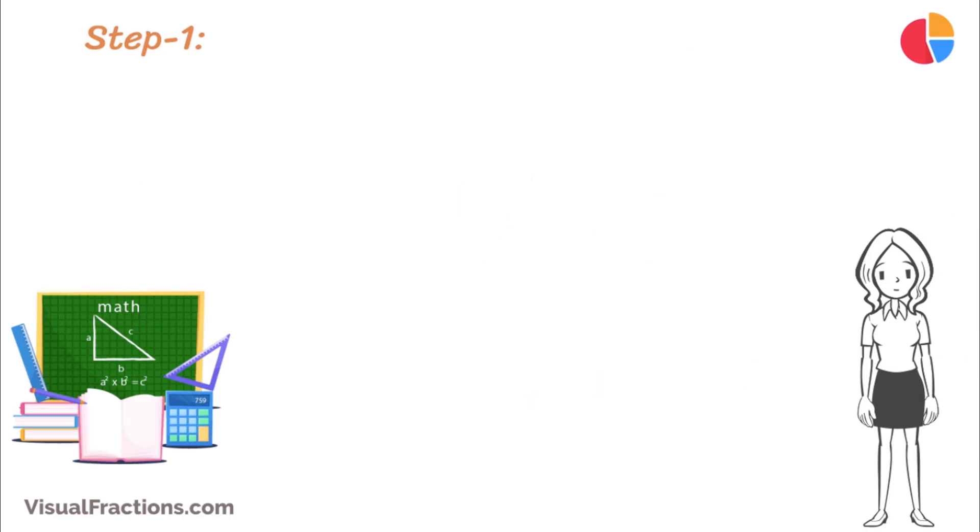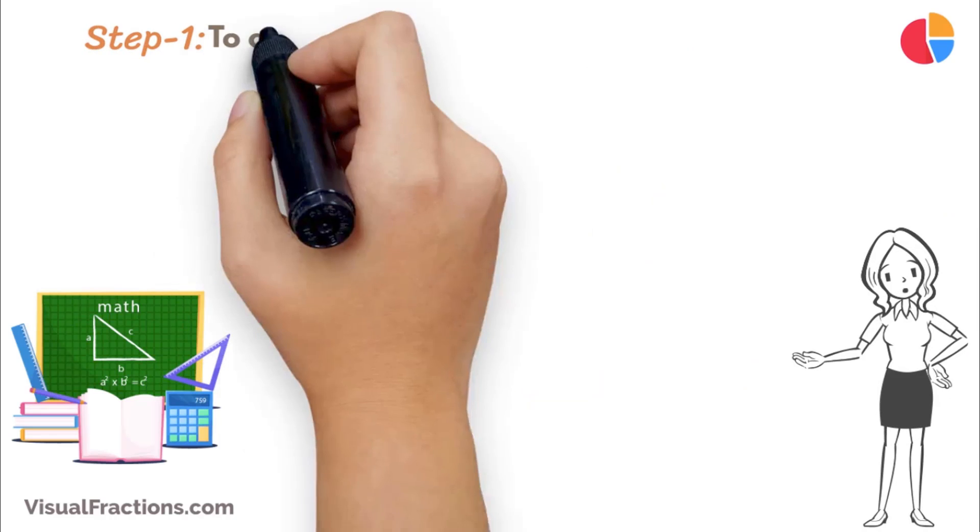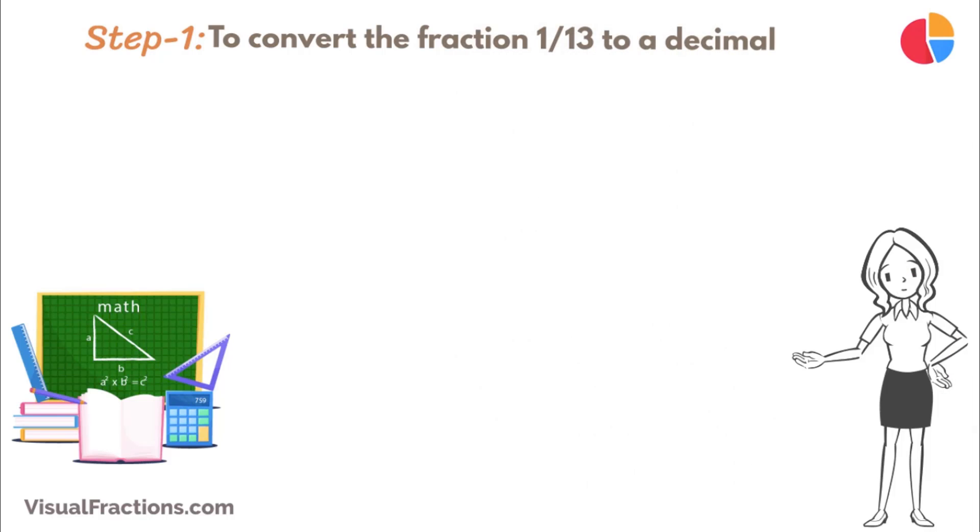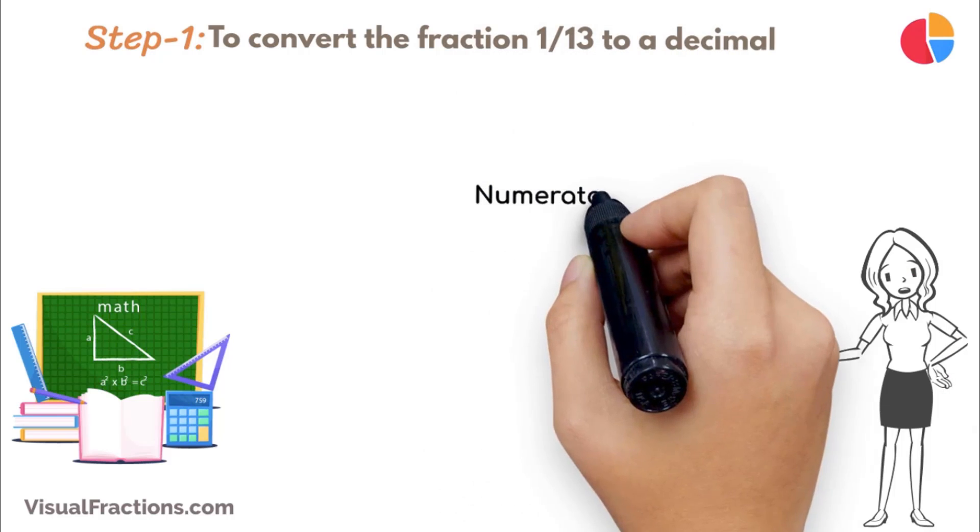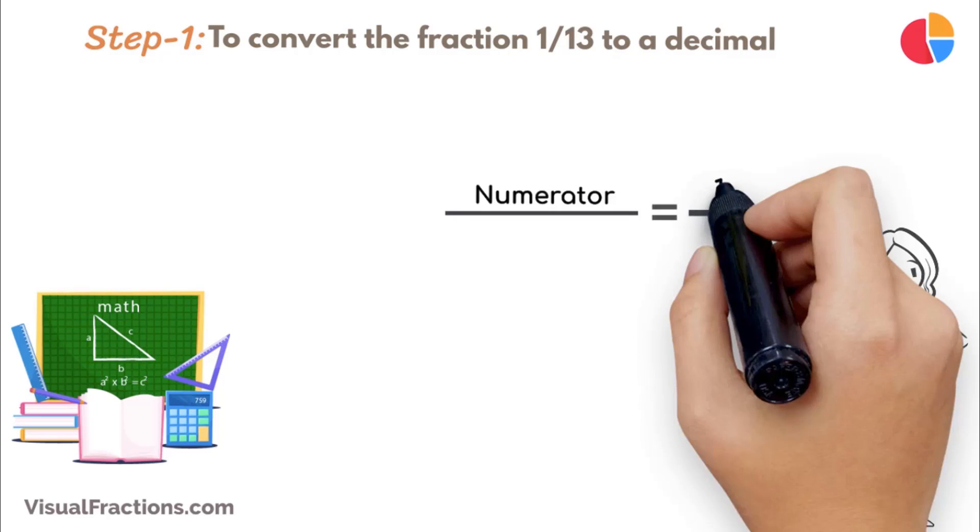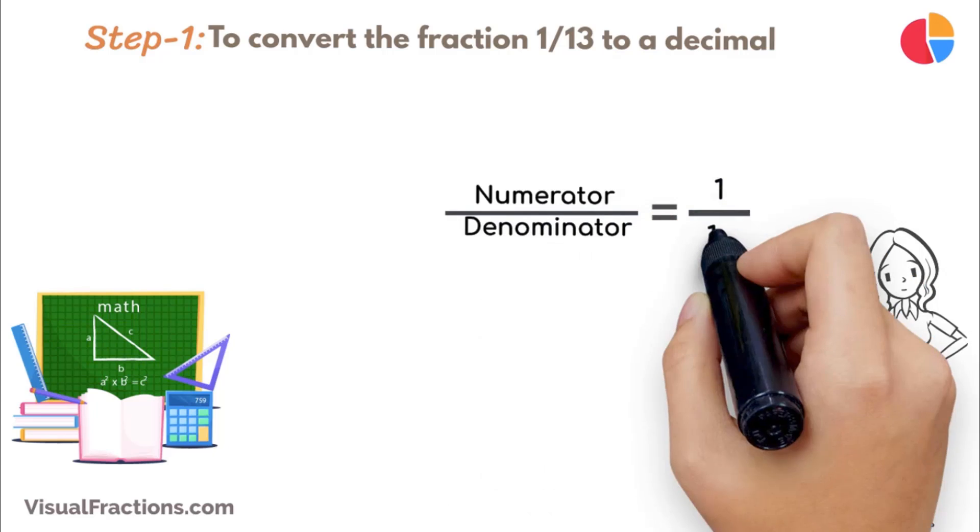The first step in converting the fraction 1/13 to a percent is to convert this fraction to a decimal. We do this by dividing the numerator, the top number, which is 1, by the denominator, the bottom number, which is 13.